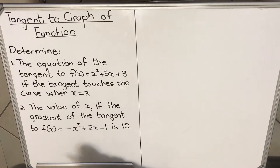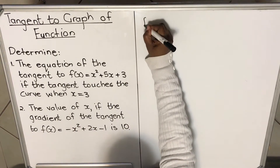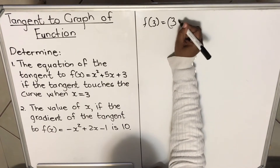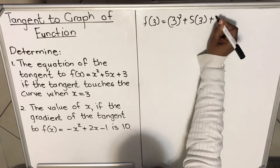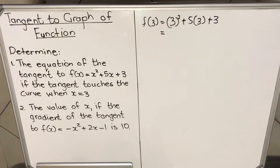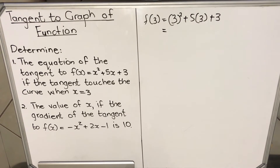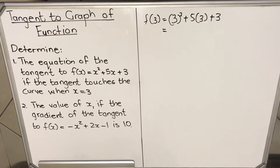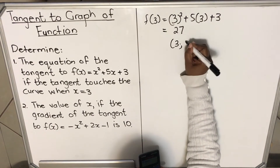The first thing you do is find the y-coordinate. Substitute x = 3 into the function: f(3) = 3 squared plus 5 times 3 plus 3. You punch it into your calculator: 3 squared plus 3 times 5 plus 3, and you get 27. So when x is 3, y is 27.